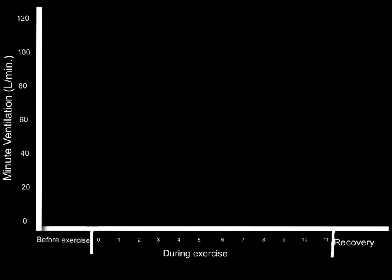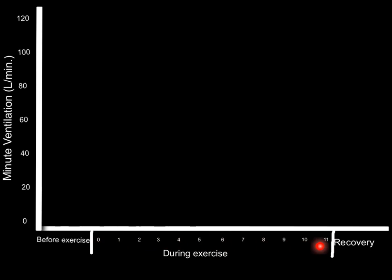Here's a graph that will illustrate this. We've got minute ventilation on the y-axis in litres per minute, from 0 to 120. Along the x-axis we have time: before exercise, then minutes of exercise from 0 to 11, and then recovery after exercise. I'm going to draw some lines and explain what each of them means.